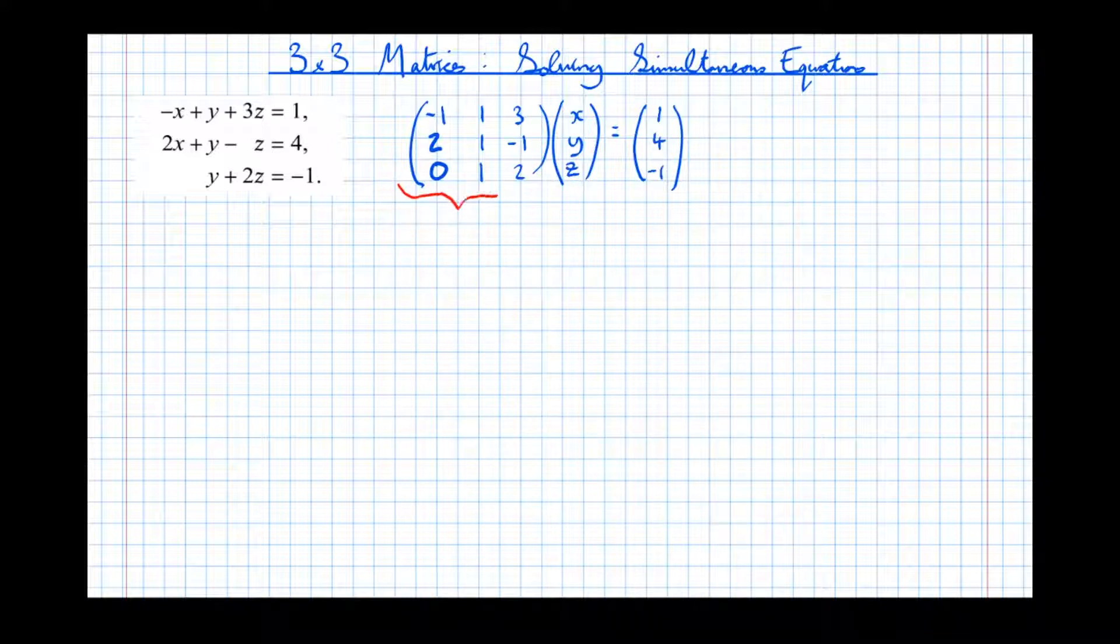Let's just take it a step further. Let's just call that matrix there M. So what this equation really says is that when we take M and multiply it by x, y, z, we get 1, 4, -1. So what I'm going to do now, I'm going to rearrange this matrix equation. I'm going to multiply both left-hand sides of the equation by the inverse of M.